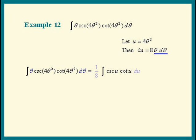Save some work and put a 1 eighth right out. Now apply our formula. We get negative cosecant u plus C. Substitute the 4 theta squared back in for u, and there's our answer.